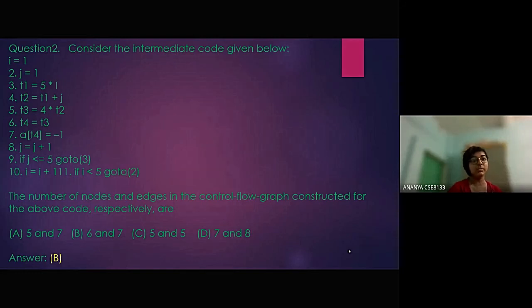Gate question number 2. Consider the intermediate code given below. Here is the code given below. The number of nodes and edges in the control flow graph constructed for the above code respectively are: Option a, 5 and 7. Option b, 6 and 7. Option c, 5 and 5. Option d, 7 and 8. Answer is option b, 6 and 7.